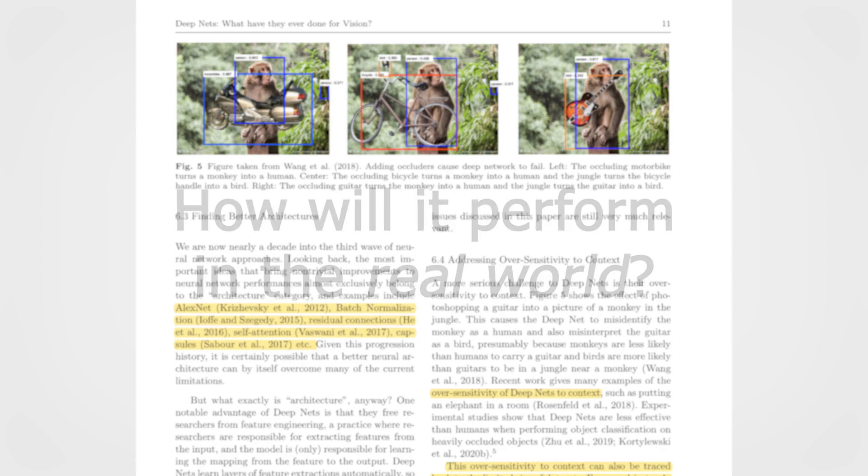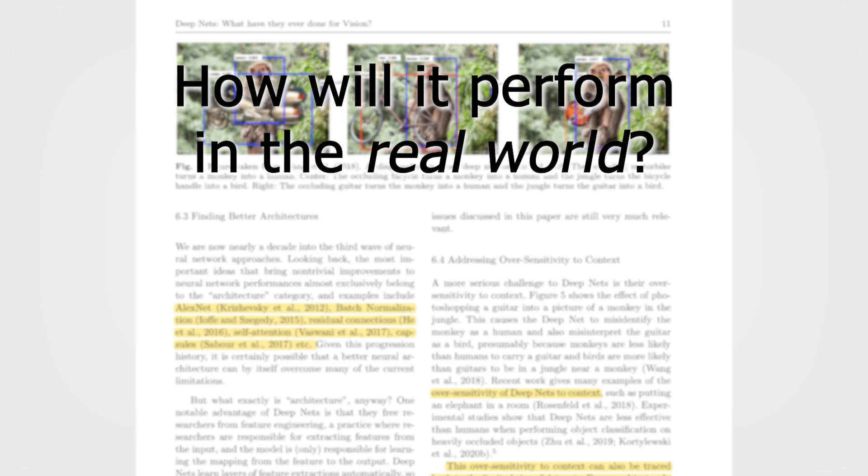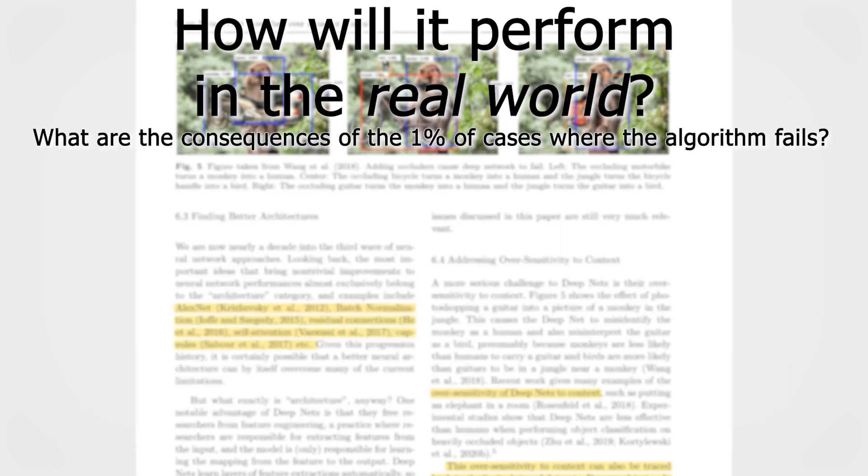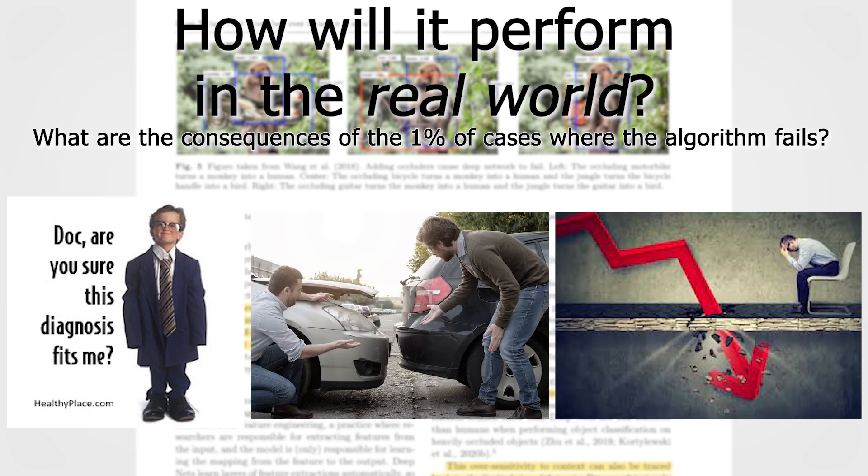These benchmarks we use to test our dataset to determine whether or not they are ready to be deployed in the real world application are not really accurate to determine how well it will actually perform, which leads to the second problem, that is, how it will actually perform in the real world. Let's say that the benchmark dataset is huge and most cases are covered, and we really have 99% accuracy. What are the consequences of the 1% of cases where the algorithm fails in the real world? This number will be represented in misdiagnosis, accidents, financial mistakes, or even worse, death.